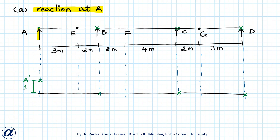These points will remain where they originally were. The beam has three straight segments: segment AE, segment EBFCG, and segment GD. These segments will remain straight after displacement. Because for segment EBFCG the vertical displacements of points B and C are zero, the entire segment EBFCG will remain horizontal after displacement. Because point A moves up by unit magnitude and point E remains where it was, segment AE should remain straight, so it rotates about the hinge at E.